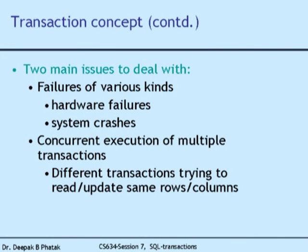How do you achieve that? It is a technical problem, but the requirement must be understood. The second issue is the concurrent execution of multiple transactions, where different transactions are trying to read and update the same rows and columns. For example, I am transferring 50 rupees from my account to a friend's account while my wife is withdrawing from the same account — both are updating the same account simultaneously.